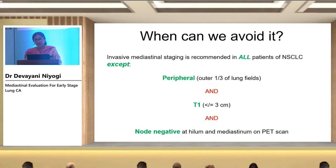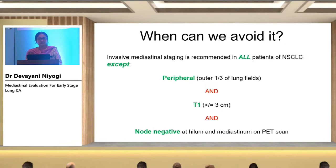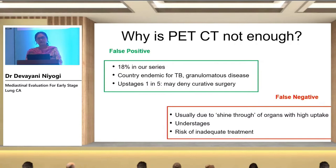Are there patients where PET CT and MRI alone is enough and we can avoid mediastinal staging? Mediastinal staging in lung cancer is actually a rule. The only exception is peripheral lung tumors in the outer one-third of the lung, T1 tumors — less than three centimeters in size — and node negative at the hilum and mediastinum on PET scan. The tumor has to fulfill all three criteria to safely say no invasive mediastinal staging is required.